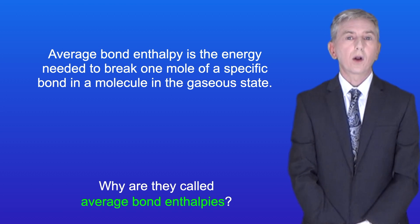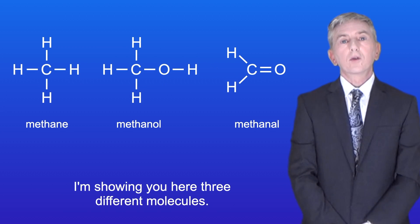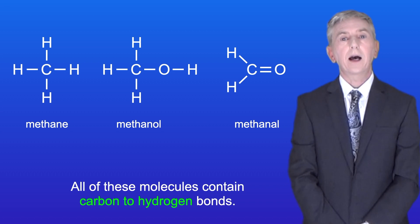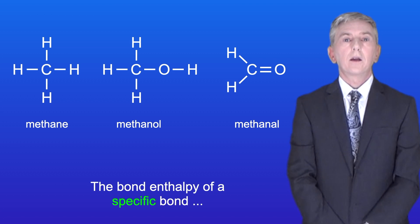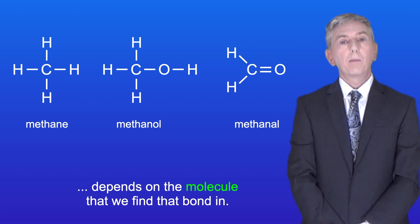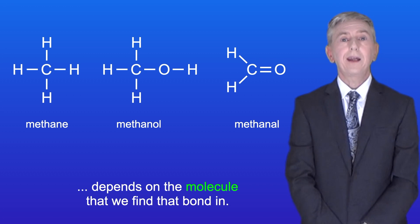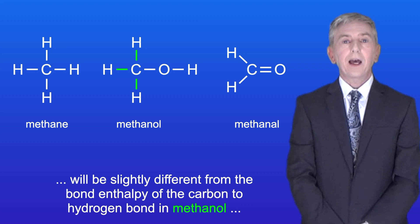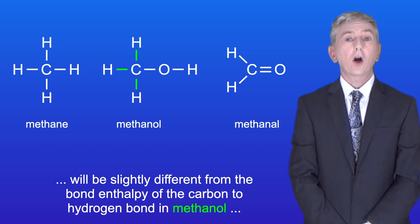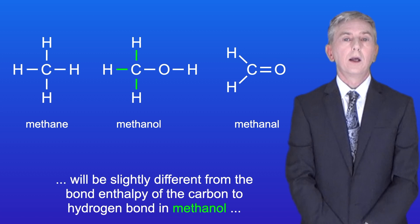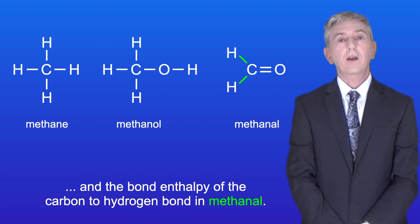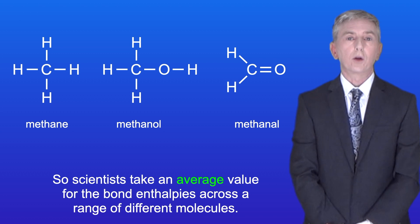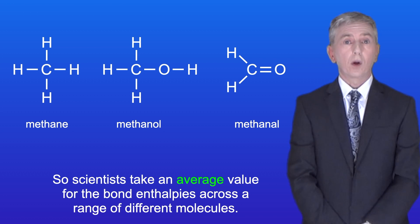So why are they called average bond enthalpies? Here are three different molecules, all containing carbon to hydrogen bonds. The bond enthalpy of a specific bond depends on the molecule that we find that bond in. So the bond enthalpy of the carbon to hydrogen bond in methane will be slightly different from the bond enthalpy of the carbon to hydrogen bond in methanol. Scientists therefore take an average value for the bond enthalpies across a range of different molecules.